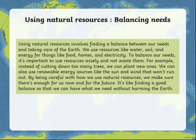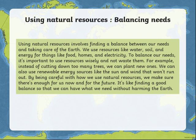Lastly, we are going to talk about balancing needs. Using natural resources involves finding a balance between our needs and taking care of the earth. We use resources like water, soil, and energy for things like food, home, and electricity. To balance our needs, it is important to use resources wisely and not waste them. For example, instead of cutting down too many trees, we can plant new ones — and that's exactly what we discussed when we talked about National Planting Day. We can also use renewable energy like the sun and wind that won't run out. By being careful with how we use natural resources, we make sure there is enough for us now and for the future. It's like finding a good balance so that we can have what we need without harming the earth.